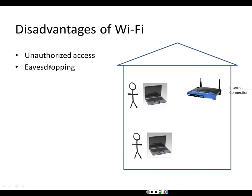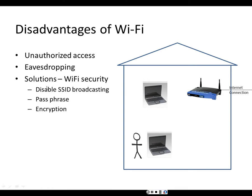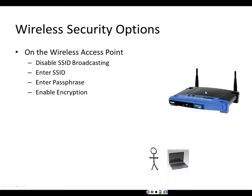To address those two threats, we implement Wi-Fi security. We disable SSID broadcasting on the wireless access point, type in a passphrase (like a password, but for hardware), and enable encryption. On the wireless access point, we disable SSID broadcasting, then type in the service set identifier — which is the name of the network — type in the passphrase, and enable encryption.